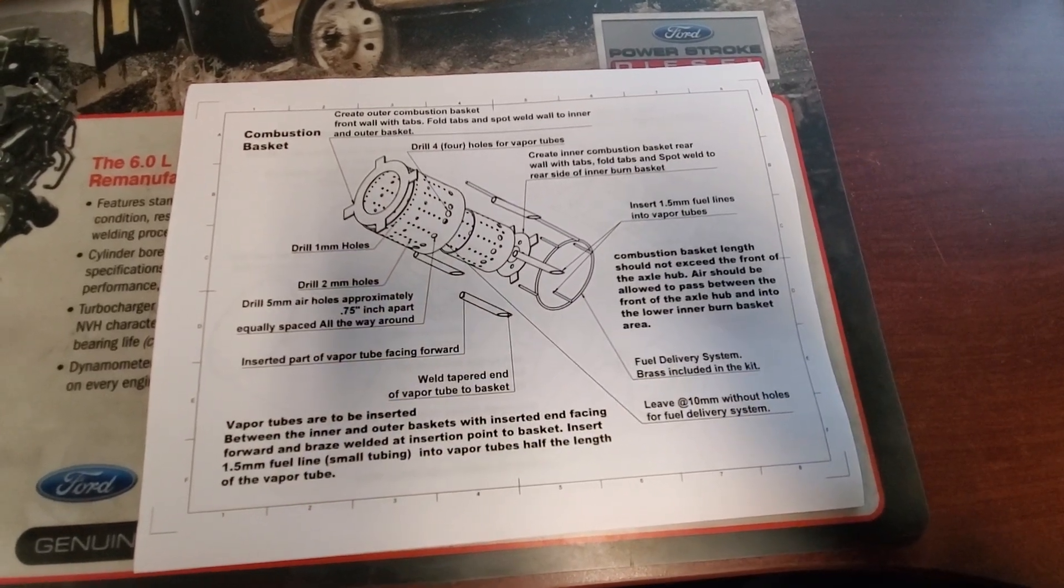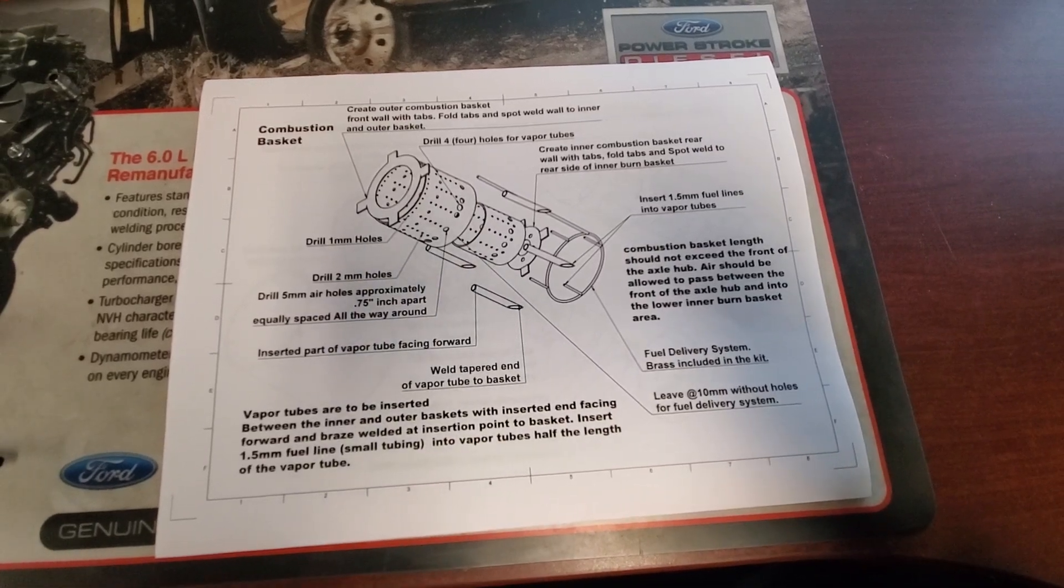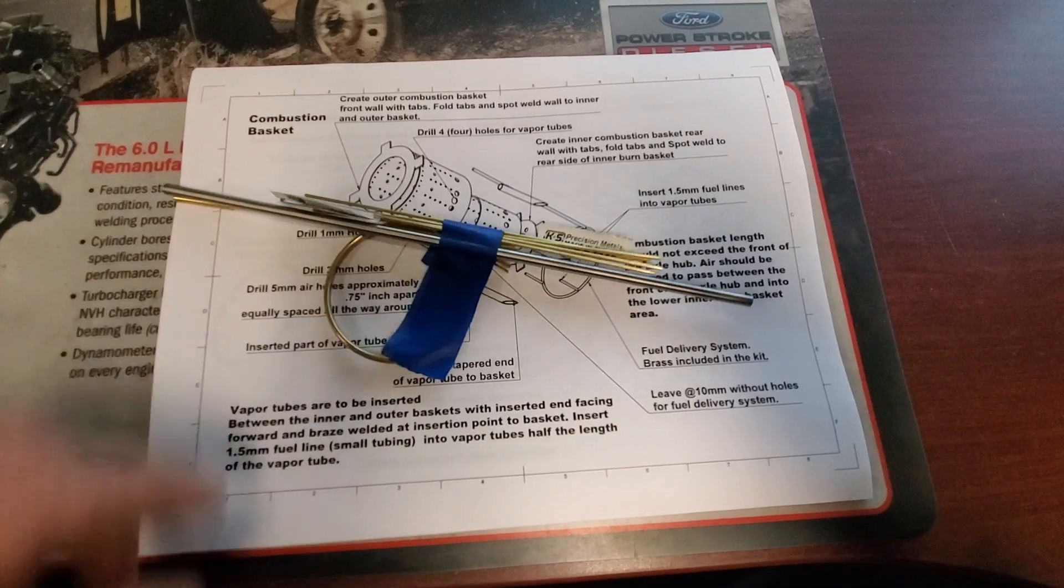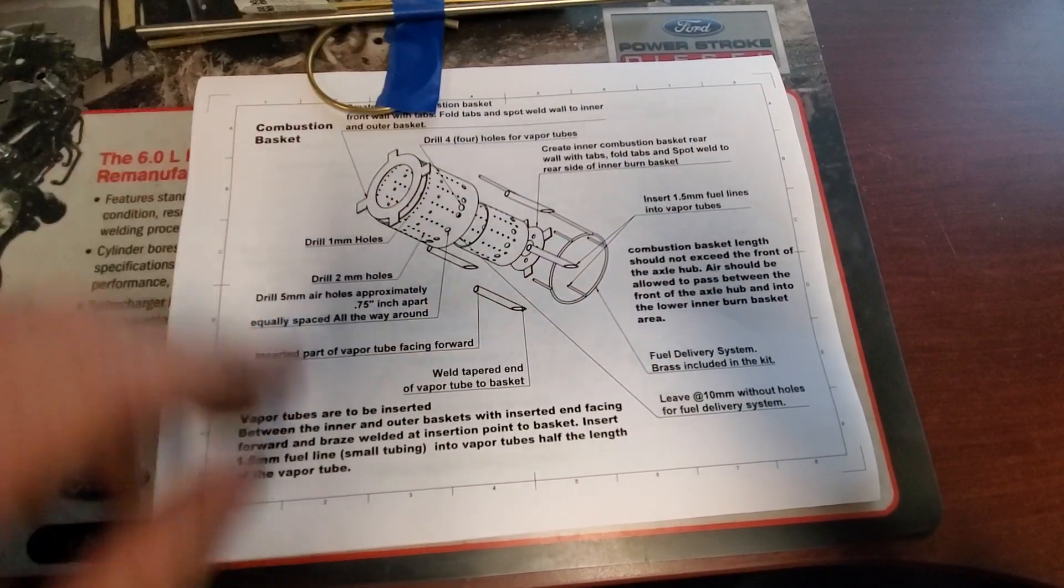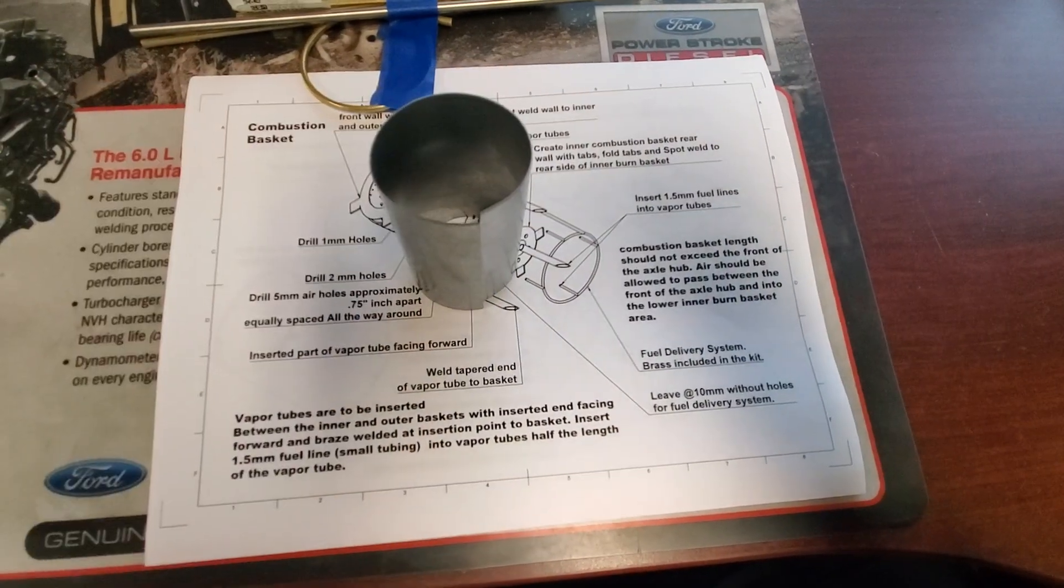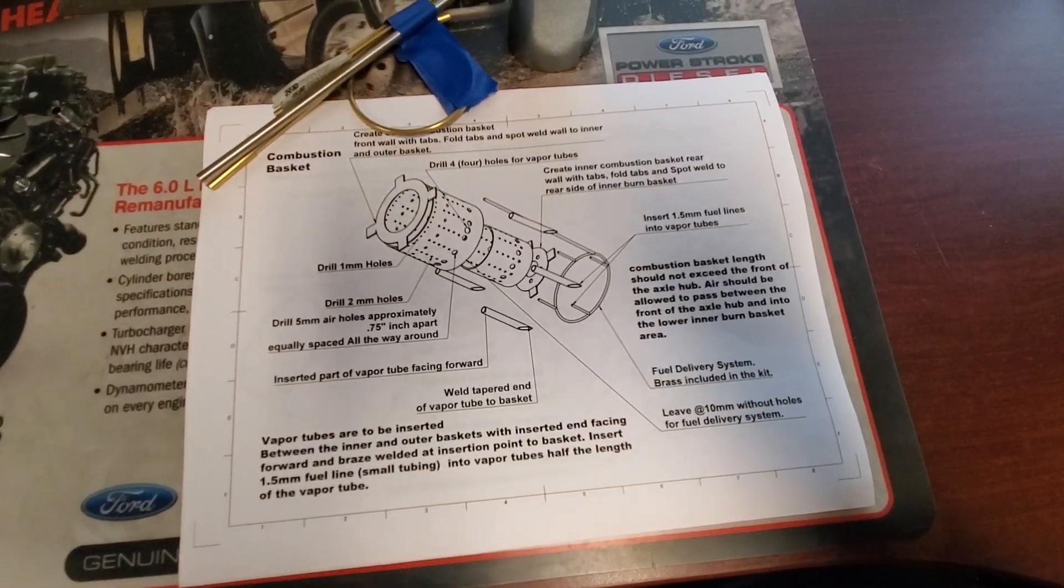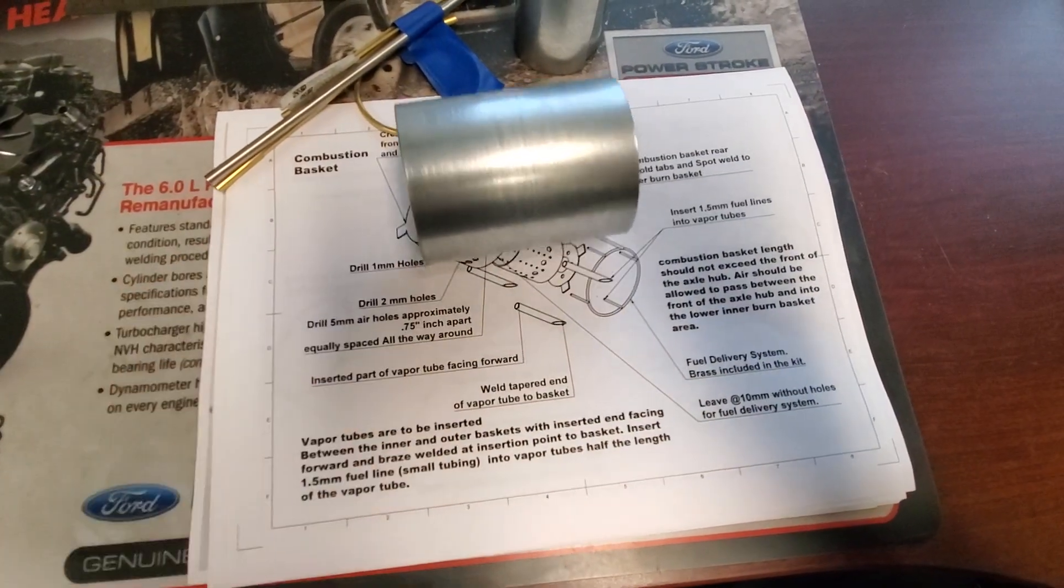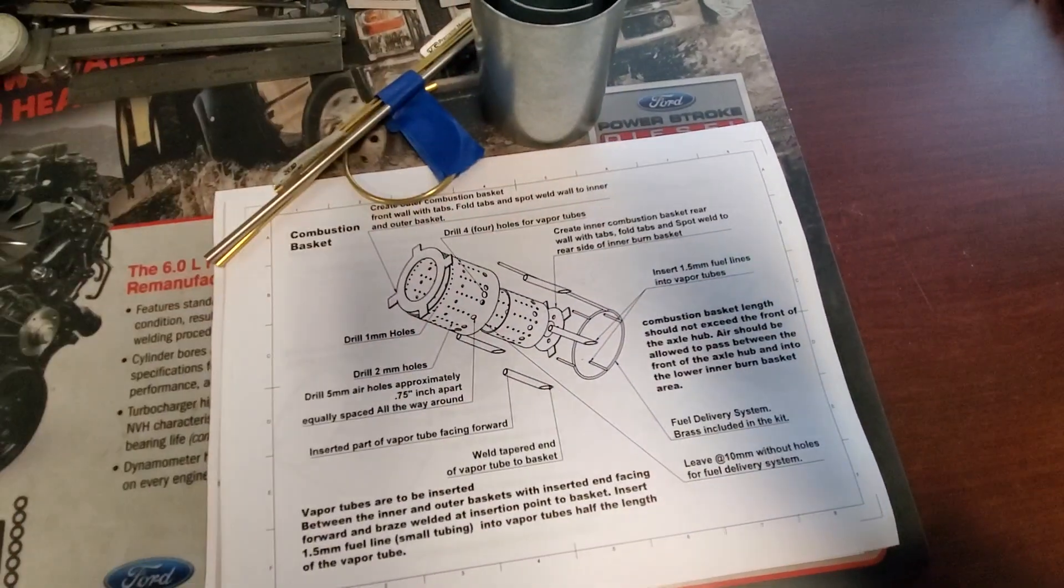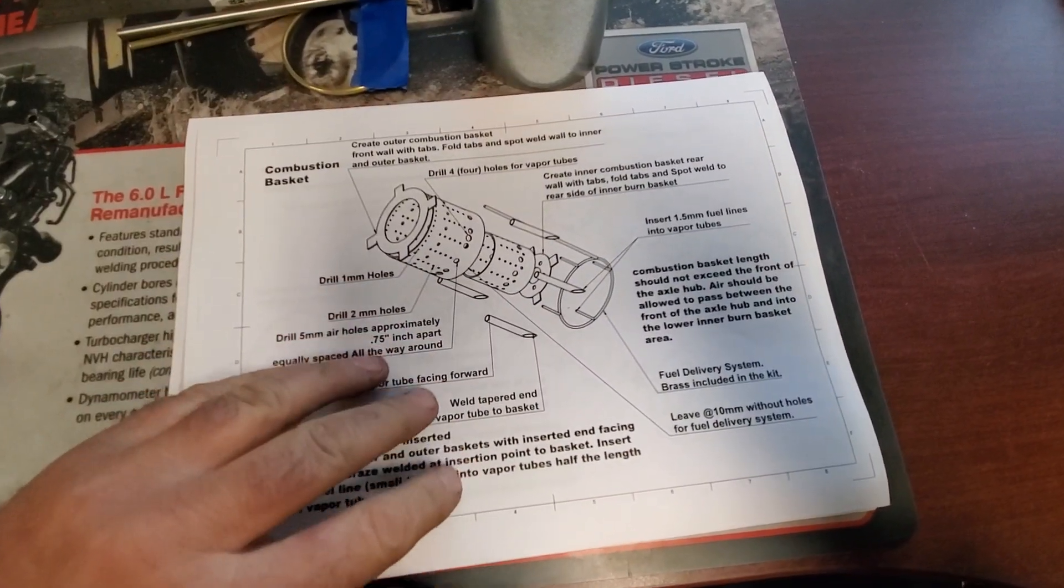So it looks like in the first drawing they show you how to do the combustor, which is basically where the fire is going to be. Brass tubing, check. Inner flame tube, check. Outer flame tube, check. See what else we got here.